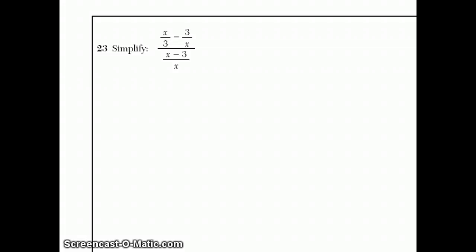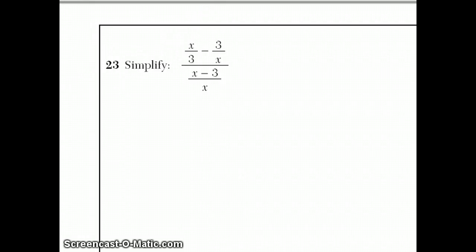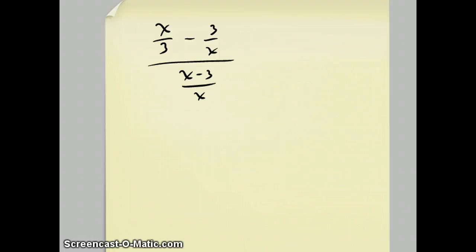For question 23, they want you to simplify this compound fraction, x over 3 minus 3 over x, all over x minus 3 over x. A question like this, the way I like to do a question like this, is by treating the top and bottom as two separate questions and first turning them both into fractions. In this case, the bottom is already a fraction. I'll just leave that alone.